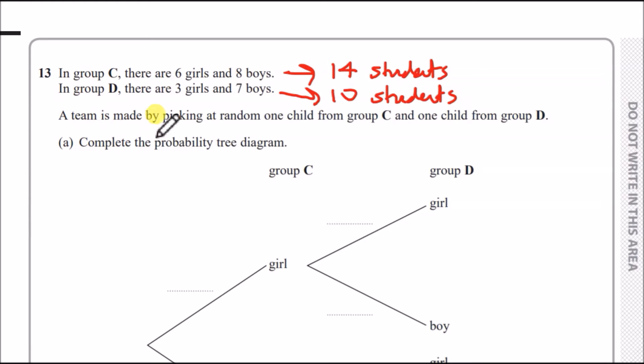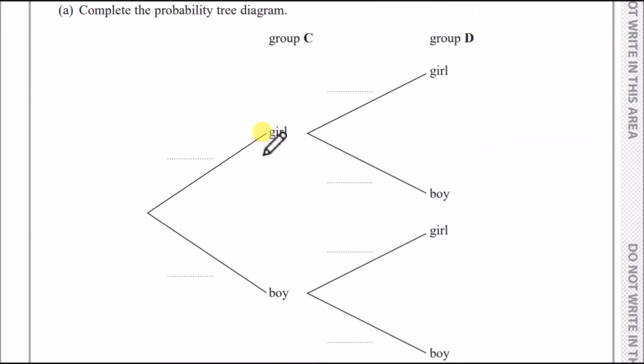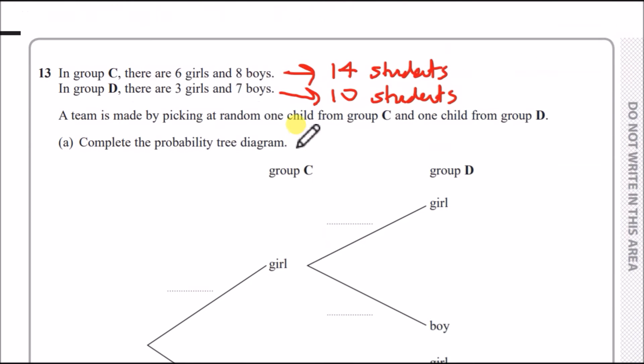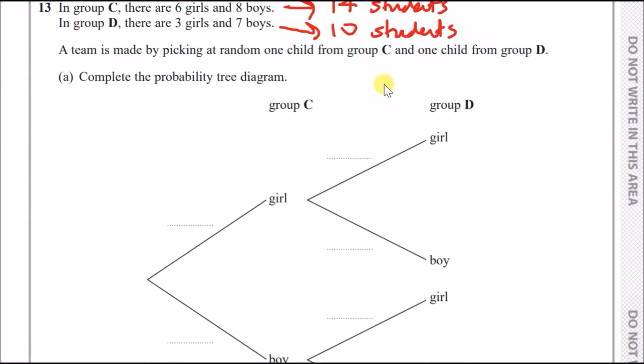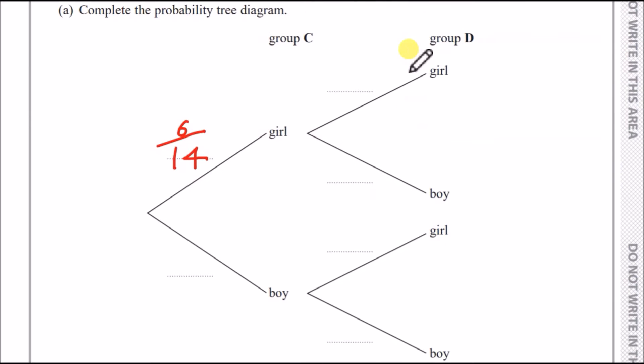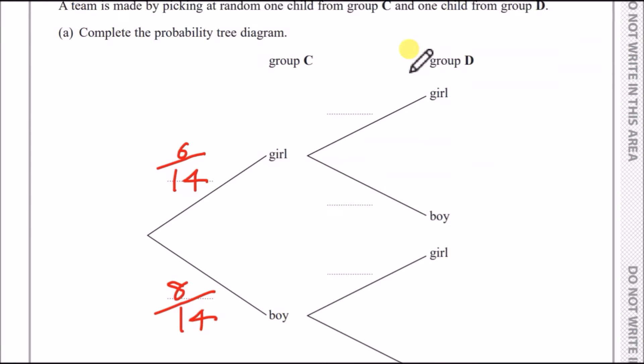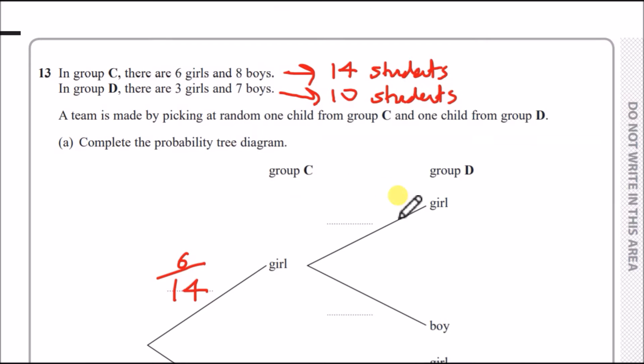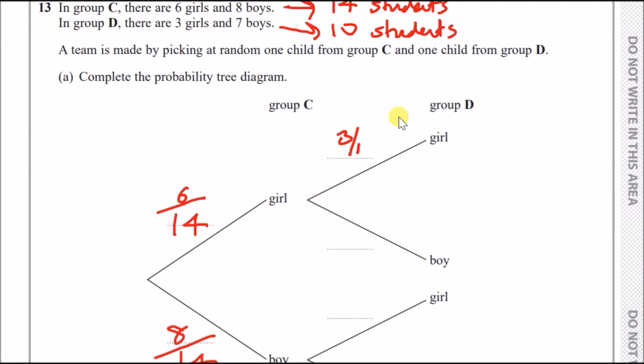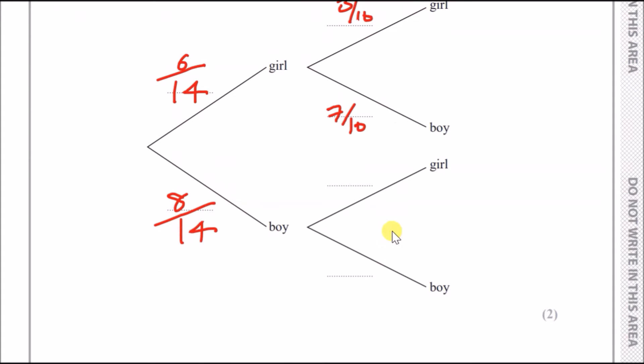Now, complete the probability tree diagram. So we look over here, the probability of picking a girl and a boy from group C. Well, we know we've got six girls out of 14, so you write six out of 14. And we know we've got eight boys here, so eight out of 14. And then on the next group, we have group D. Girl-wise, we have three out of 10, boys seven out of 10. And this is just the same tree. So three out of 10, seven out of 10.